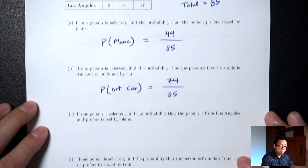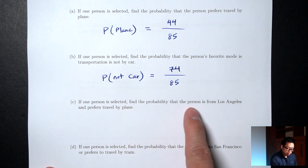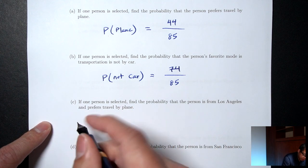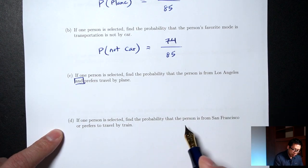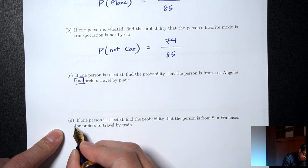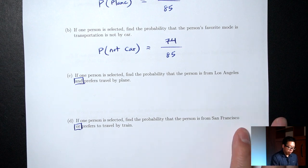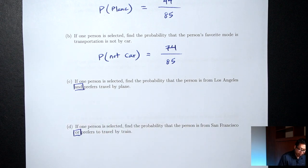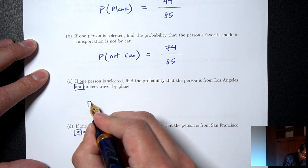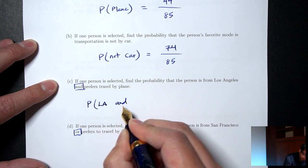The next two parts involve some keywords to pay attention to. In probability, the words 'and' and 'or' mean something very specific. Part C: find the probability that the person is from Los Angeles and prefers travel by plane. In symbols, I'm looking for P(LA and plane). The bottom is still 85. The word 'and' means I want people who are Los Angeles and at the same time prefer plane.